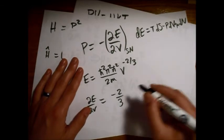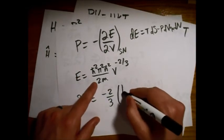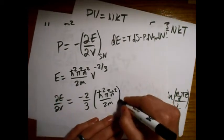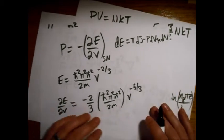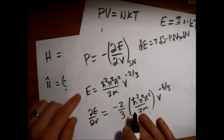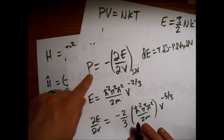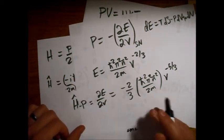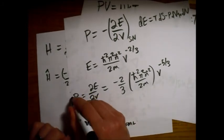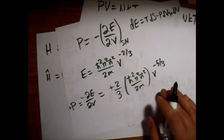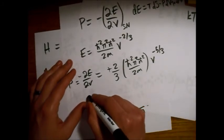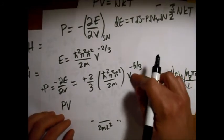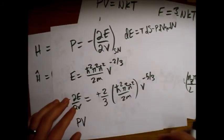So we get a minus two-thirds out front. And we have this constant piece in here. And we have a V to the minus five-thirds. So this is the definition of the opposite of the pressure. So there's a minus sign here, but I'll go ahead and make that a positive and then bring that through. So now we need to find our PV. So we just take this and multiply it by V, which just returns this V back up to the minus two-thirds power.